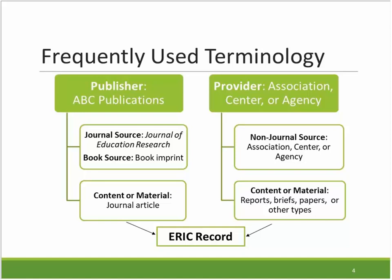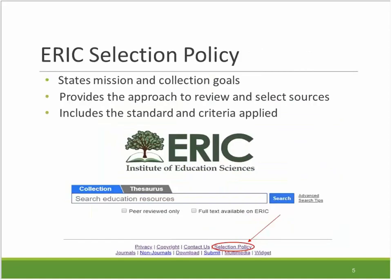During a review cycle, we consider all aspects: the publisher or provider, the source, and the material. The ERIC selection policy is your go-to document to find the ERIC mission statement, the general collection goals, and everything we will cover today — how we review and select sources, and the standard and criteria we use to weigh every source during the review process. A PDF of the complete document is available by clicking the selection policy link at the bottom of the ERIC website page. We periodically review this document to make sure it accurately and clearly communicates our policies and processes.